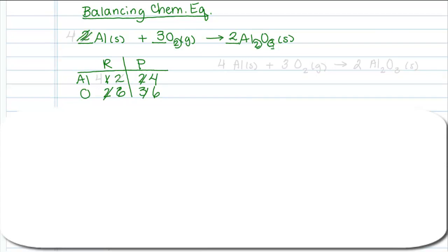So I have to change this coefficient from two to four because I need four on that side, not just two. So the balanced equation is four atoms of aluminum, three moles of oxygen gas, three molecules of oxygen gas, and two molecules of aluminum oxide. This would give me a balanced equation.